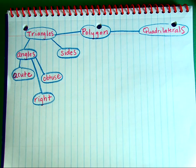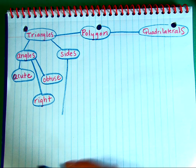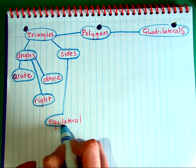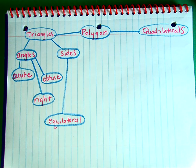We can also classify a triangle by the measure of its sides. So if we measure the three sides of a triangle and all three of them are equal, we call this an equilateral triangle. If you look at the root word, it has the word equal in it, so that means all three sides of the triangle are equal in length. The second way we can classify triangles according to its sides is if two of the sides are the same — we call this an isosceles triangle.